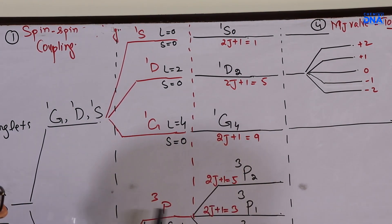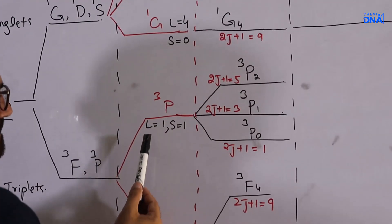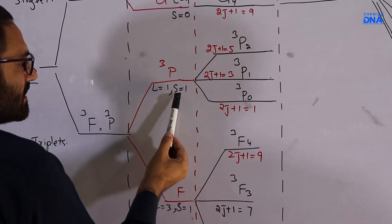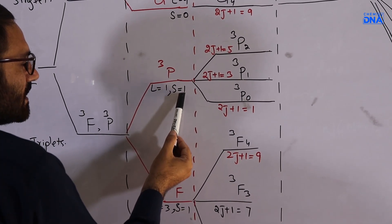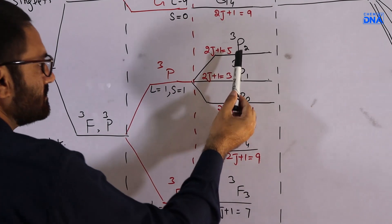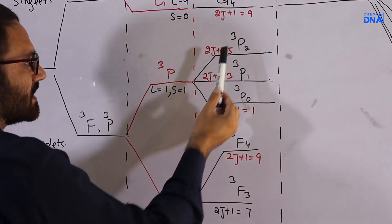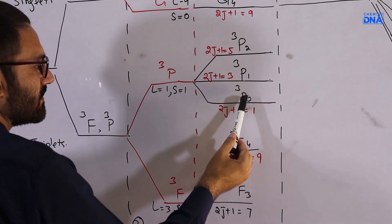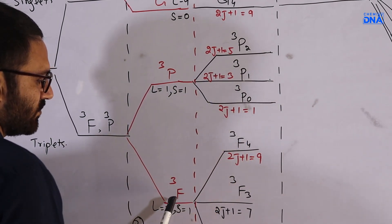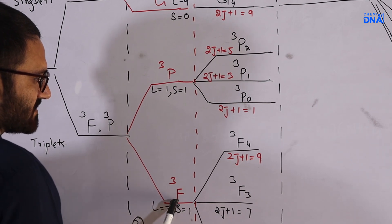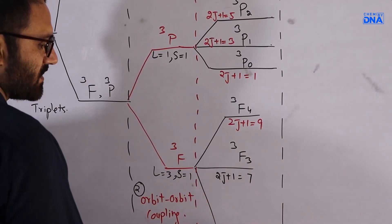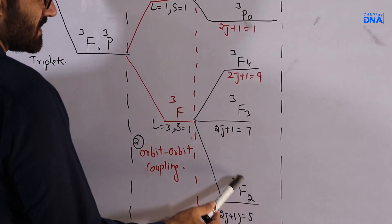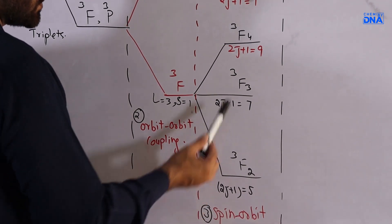For the ³P system, L=1 and S=1, giving three spectroscopic terms: ³P₂, ³P₁, and ³P₀. For the ³F term, it also yields three spectroscopic terms: ³F₄, ³F₃, and ³F₂.